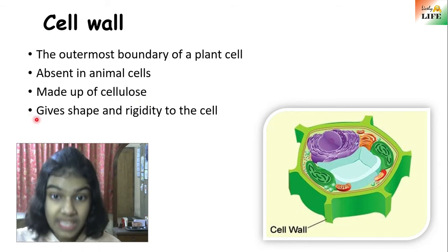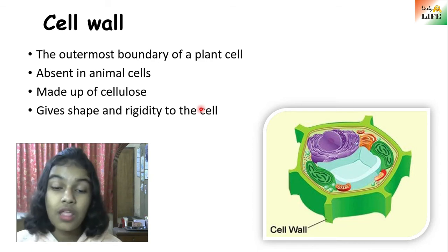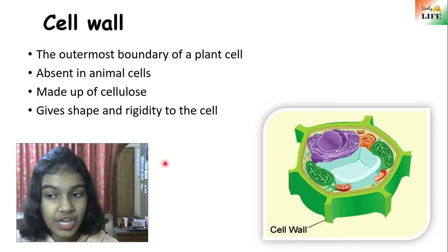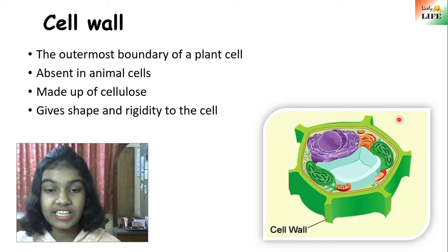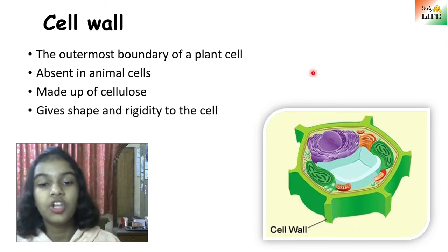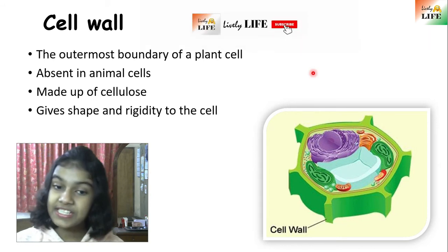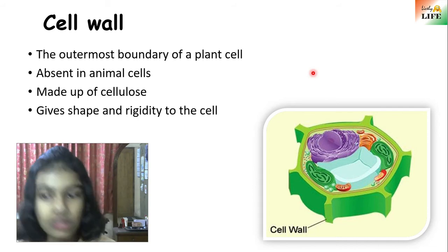To give protection and rigidity, the cell wall is present. Cell wall gives shape and rigidity to plant cells — if you touch the bark of a tree you can see how hard the plant is, and that is what the cell wall does. So, cell membrane is present in both plant and animal cells, but cell wall is absent in animal cells. Animal cells have only the cell membrane, while plant cells have both cell membrane and cell wall.